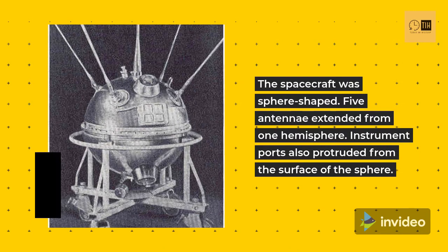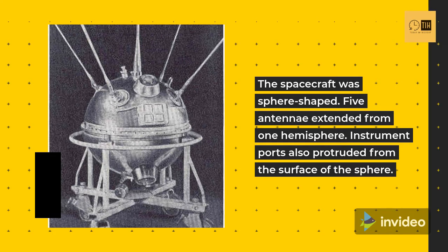The spacecraft was sphere-shaped. Five antennae extended from one hemisphere, and instrument ports protruded from the surface of the sphere.